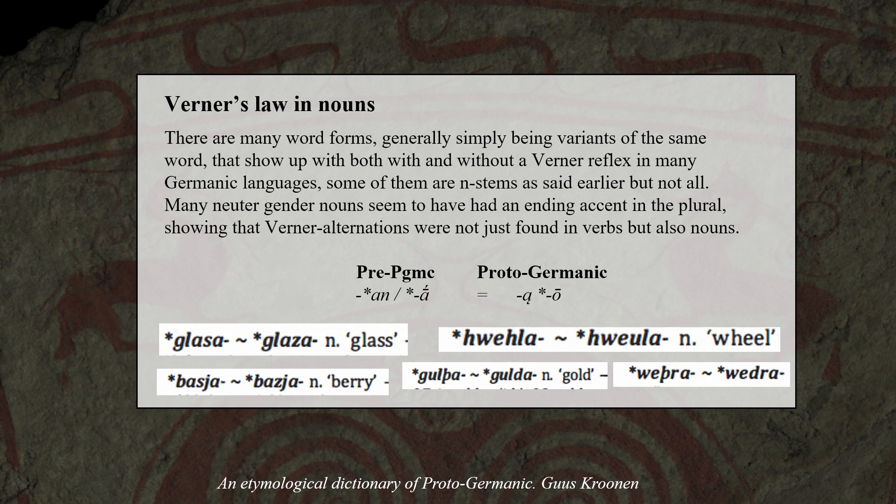Verner's Law is very well known in verbs in Germanic and comparatives, but there are also traces of Verner's Law operating in noun morphology, not only n-stems but also neuter nouns. For example, there are many word pairs in Germanic that show up with and without a voiced consonant, in particular neuter nouns, that seem to point to an ending accent in the plural or collective form, showing that at some point Verner alternations were also found in nouns similar to verbs.